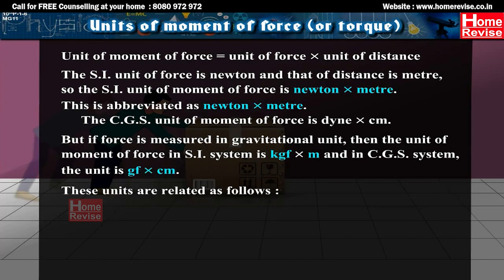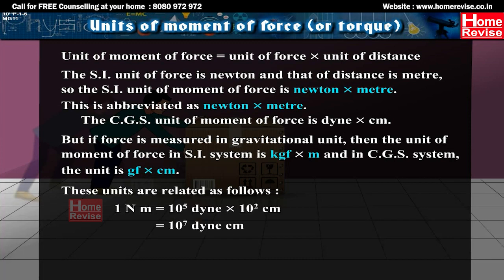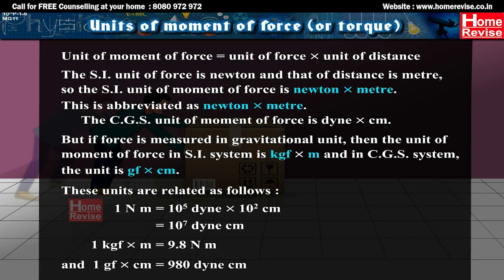These units are related as follows: 1 Nm equals 10⁵ dyne × 10² cm, which equals 10⁷ dyne·cm. 1 kgf·m equals 9.8 Nm, and 1 gf·cm equals 980 dyne·cm.